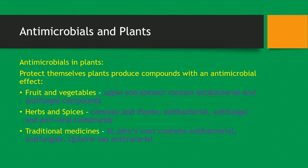Now let's get back to antimicrobials. Antimicrobials can actually be produced by plants, and they treat all different types of microorganisms, not just bacteria. Plants protect themselves by producing compounds with an antimicrobial effect. For example, apple and spinach contain antibacterial and antifungal compounds. Herbs and spices such as caraway and fennel have antibacterial, antifungal and antiviral compounds. Traditional medicines such as St. John's Wort contain antibacterial and antifungal properties, while quinine has anti-malarial properties.